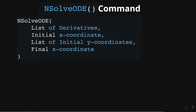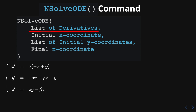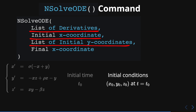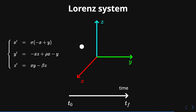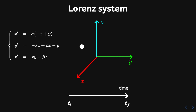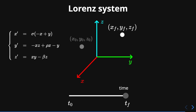In order to use the nsolveode command, we need to input four objects. First, the list of derivatives — in this case, the Lorenz system. Second, the initial x-coordinate, that is the initial time usually represented as t0. Then the list of initial y-coordinates, which are the initial conditions at the initial time. And finally, the final x-coordinate, that is the final time. So if we know the initial position of the particle at t0, the numerical solution provides the position at any time between the initial and final time.